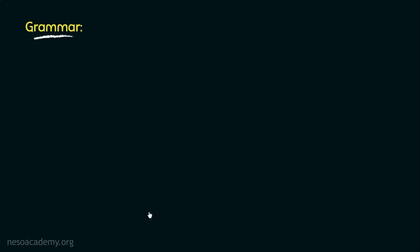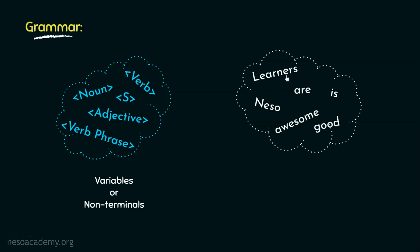Now, generally, these noun, verb, adjective, verb phrase, sentence, are called the variables, or non-terminals. Whereas, the words Learners, Neso, are, is, awesome, and good, these are called the constants, or terminals.